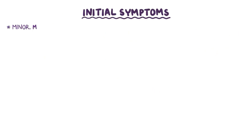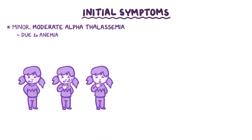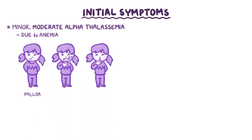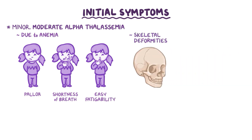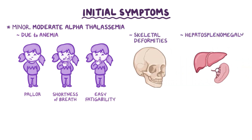The initial symptoms of minor and moderate alpha-thalassemia are due to anemia, which include pallor, shortness of breath, and easy fatigability. There can also be skeletal deformities and hepatosplenomegaly.